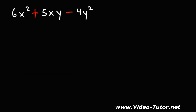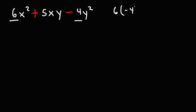Now let's work on a second example for practice — feel free to pause the video if you want to try it. Just like before, we multiply the first coefficient by the last coefficient: 6 times negative 4 equals negative 24. We need to find two numbers that multiply to negative 24 but add to the middle coefficient 5.